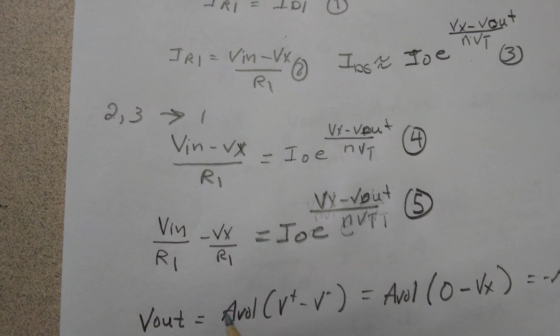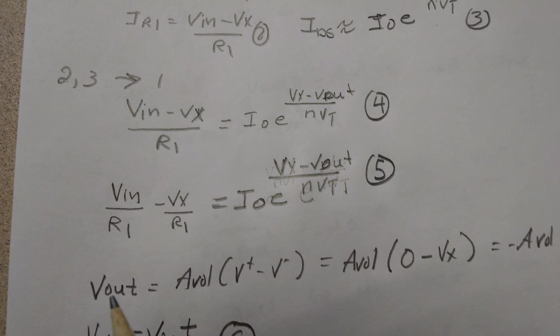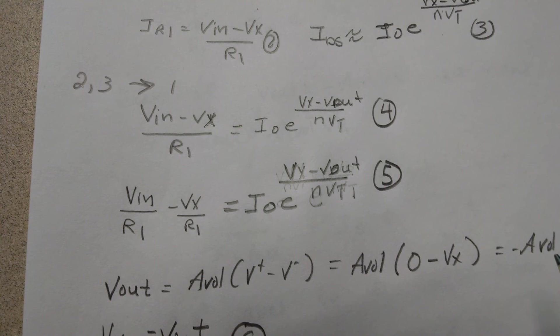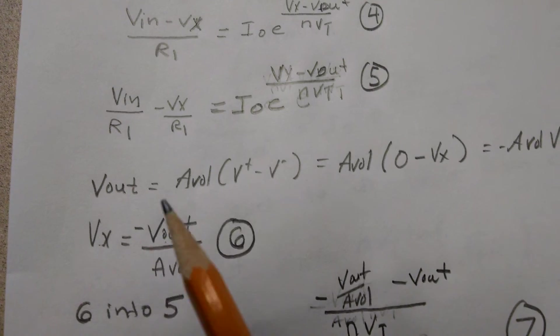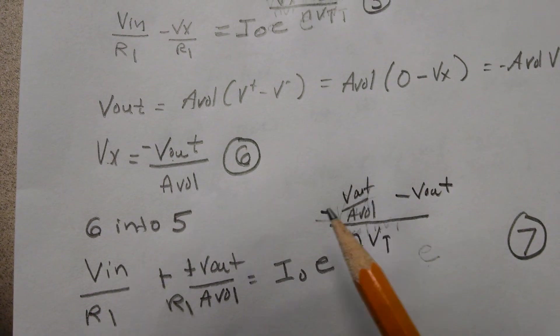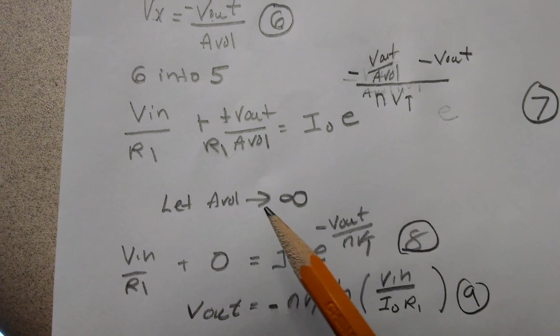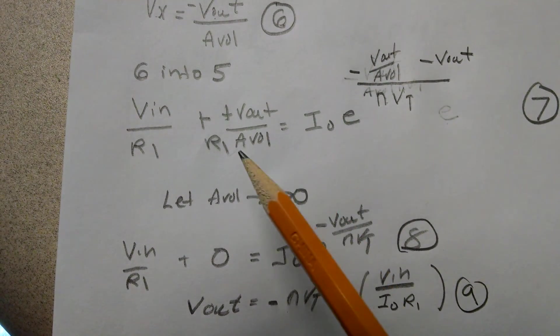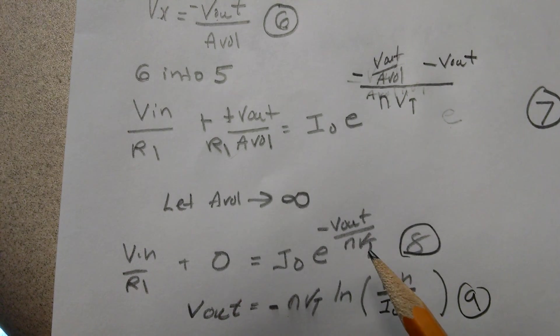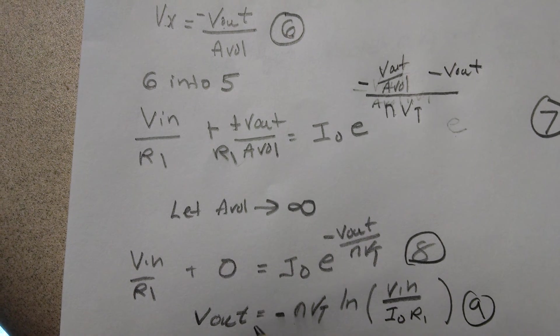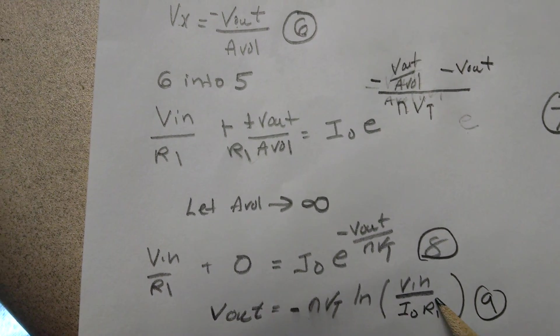Then we use the op-amp equation again. It's inverting, so we're going to get Vout equals negative Avol times Vx. Put in Vx, six into five. And we can see that if we let open-loop gain go to infinity, this term goes to zero, this term goes to zero. We're left with this equation, and we can rearrange and we get the classic logarithmic amplifier topology.